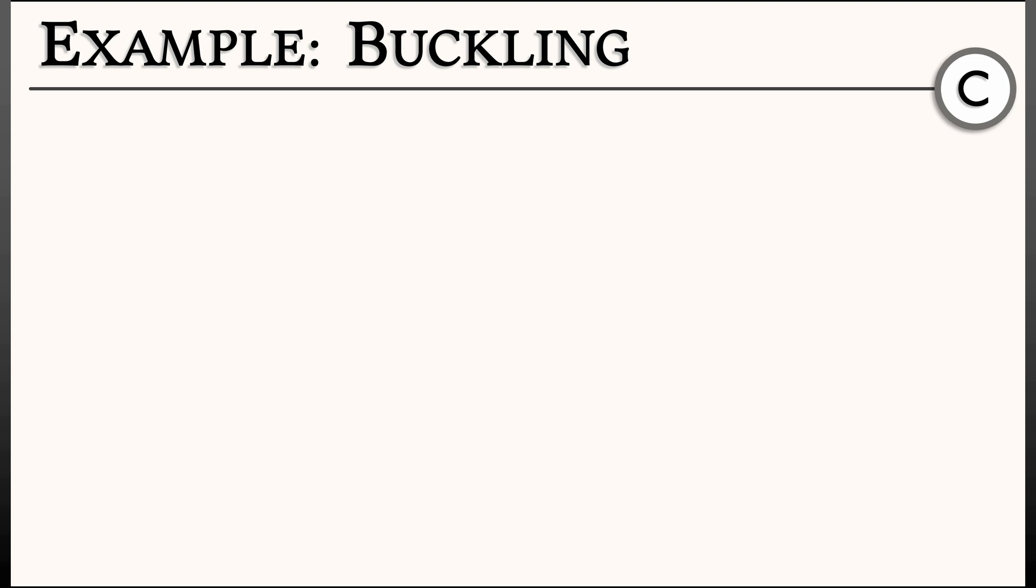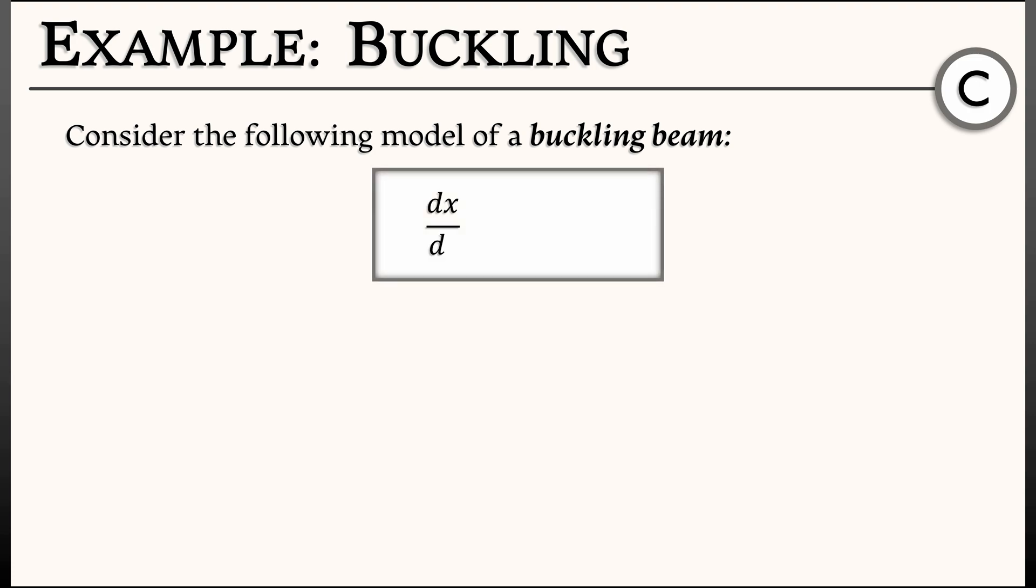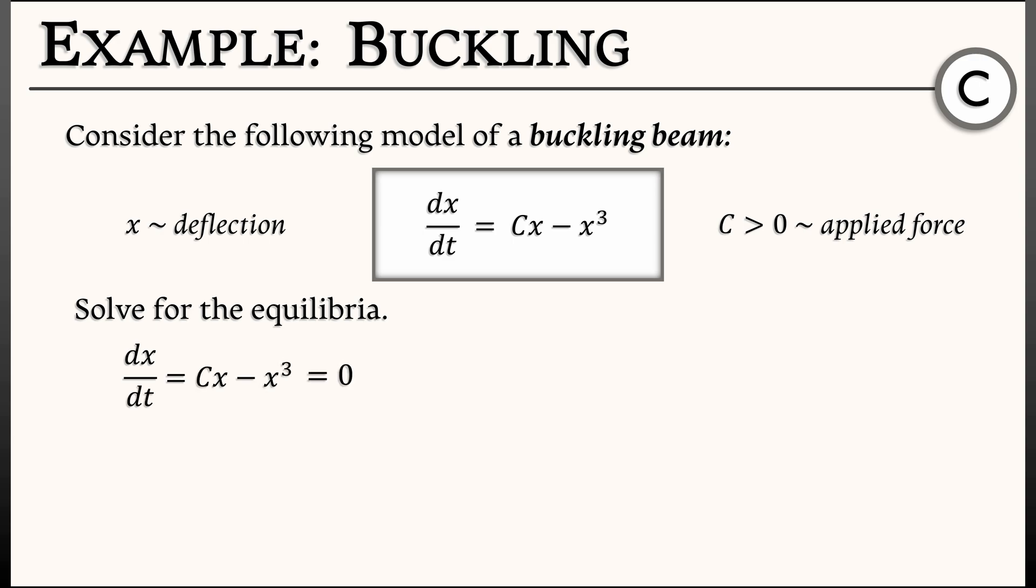Let's move on to a simple example in continuous time. Here's a model of a buckling beam. The equation is dx dt equals c times x minus x cubed. Here x corresponds to the deflection in the center of a beam that's being squeezed or loaded with a force that is some positive constant capital C. Given this model, let's solve for the equilibria. dx dt is cx minus x cubed, set that equal to zero, solve that. Well, there's one solution at x equals zero, that's an equilibrium. There's another solution at x equals square root of C, that's an equilibrium. And there is one final solution at x equals minus square root of C. So this model has three equilibria.